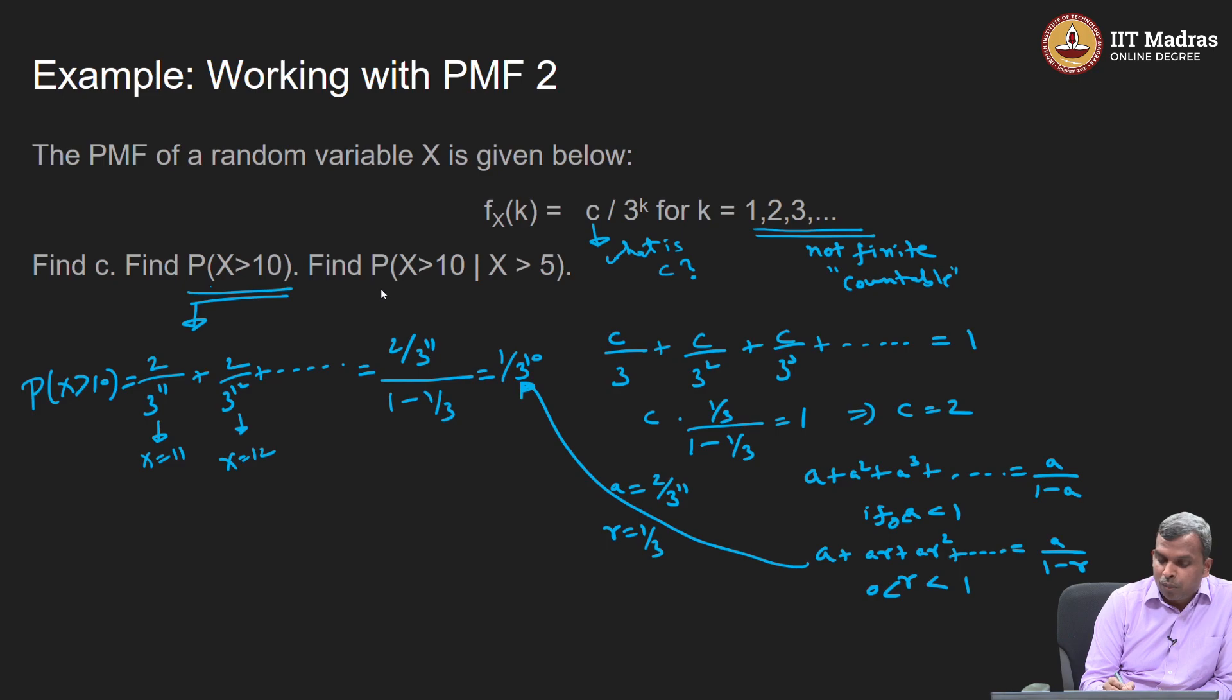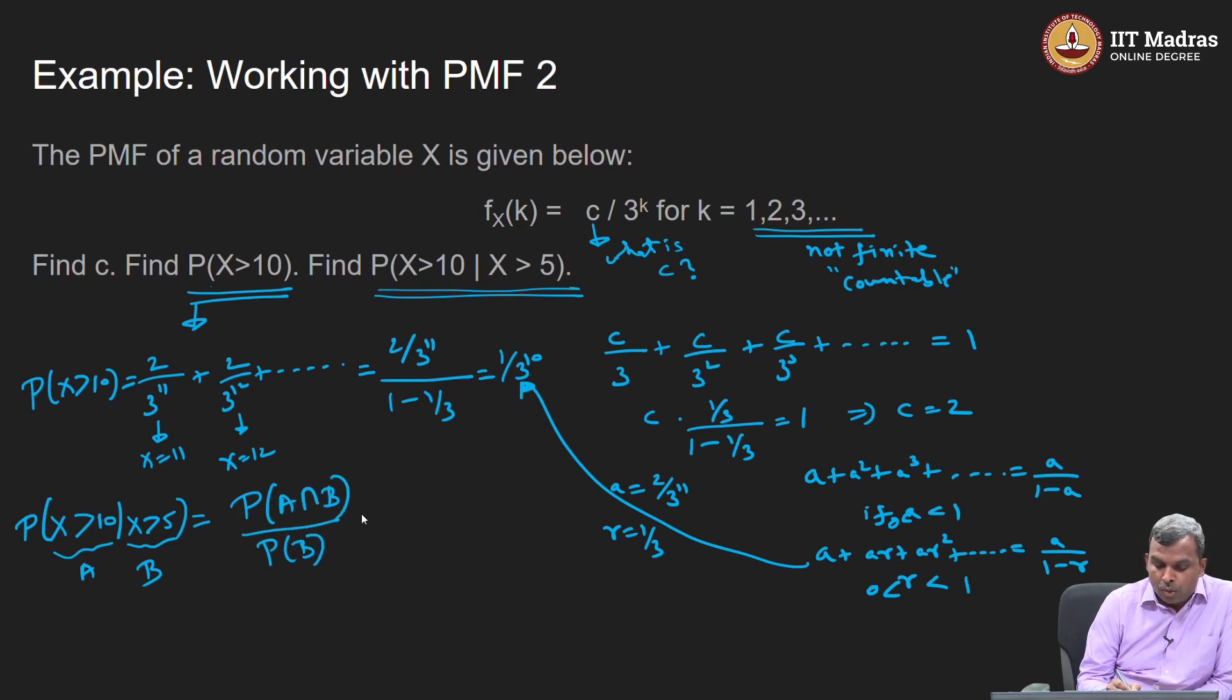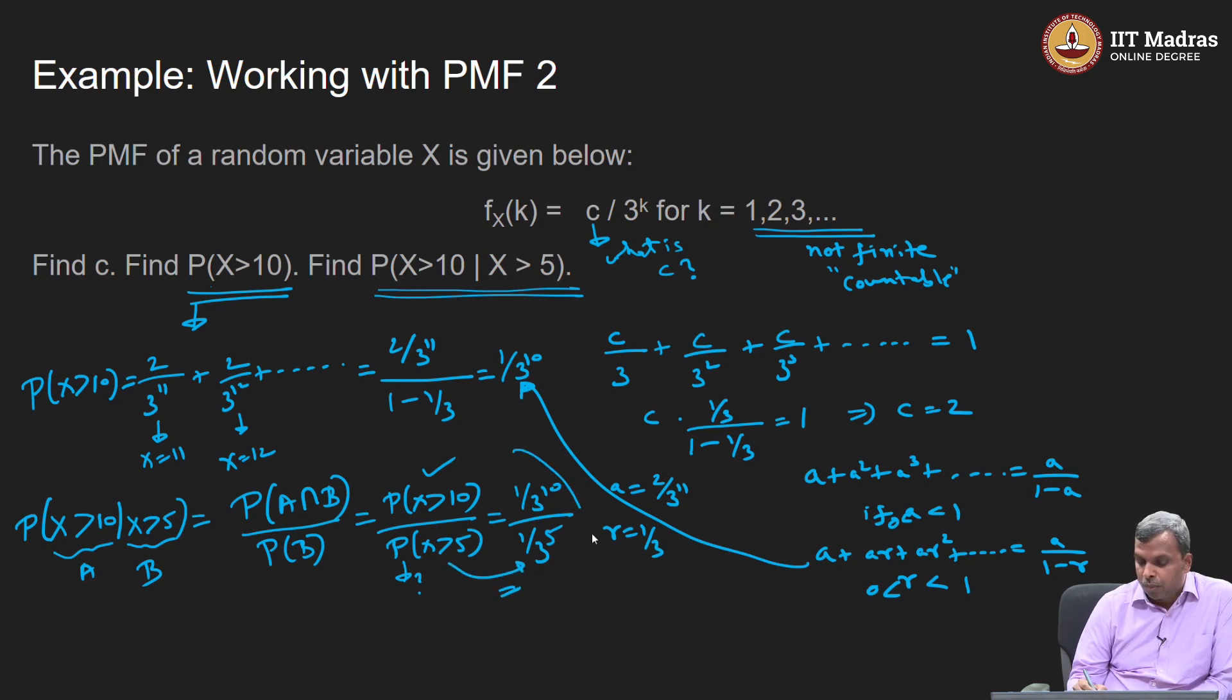Now, what about this guy? What is this conditional probability? How do you do condition X greater than 10 given X greater than 5? We use the probability of a given b is probability of a intersect b by probability of b. What is probability of a intersect b? X is greater than 10, intersected with X is greater than 5, that is nothing but X is greater than 10. This one we already know, what about this one? Use the same thing, 2 by 3 power 6 plus 2 by 3 power 7, so on. You will see this is also 1 by 3 power 5. You will see 1 by 3 power 10 by 1 by 3 power 5. That is the answer.